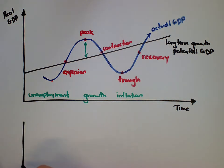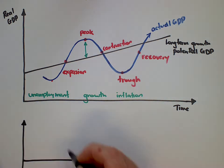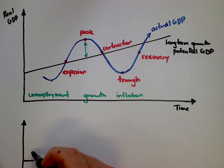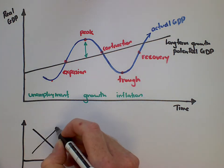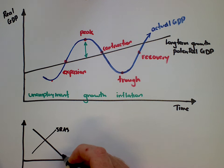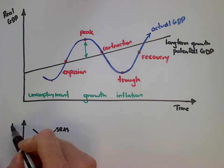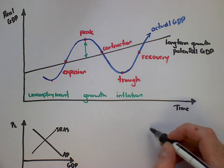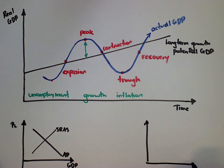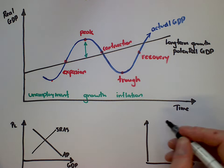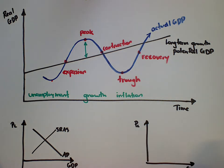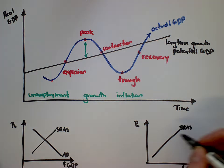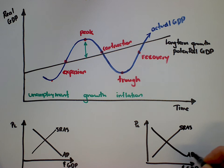So if we have a simple graph down here, this is what we call a short run AS and an aggregate demand curve, price levels on the side. And for illustration sake, I'm just going to draw another one over this side. This is called real GDP down the bottom, down the side.